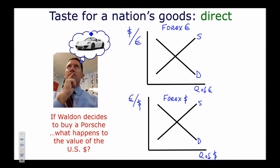For the dollar graph: supply, demand, quantity of dollars on the x-axis, price as euros per dollar. When I buy the Porsche, I go to the foreign exchange market and buy euros — the demand for euros increases, and the euro appreciates. Because everything does the opposite, if the euro appreciates, the dollar must depreciate. Buying euros means I'm putting US dollars into the foreign exchange market, creating an increase in the supply of the US dollar.